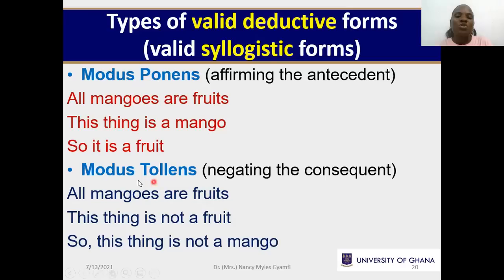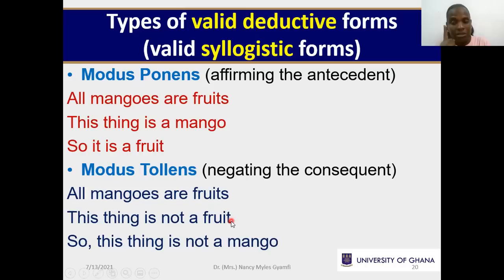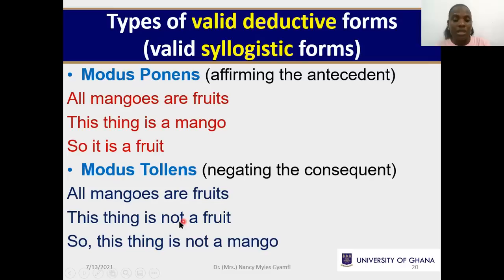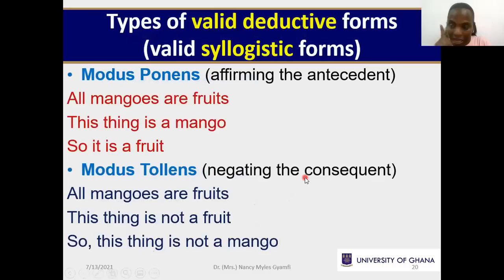What we have just done is the modus tollens pattern of reasoning, and it is valid. For a correct modus tollens: right after your universal, negate the consequent, then conclude with the negation of the antecedent. We will have a fallacy — a formal fallacy — when we negate the antecedent instead. The fallacy is called denying the antecedent instead of the consequent.